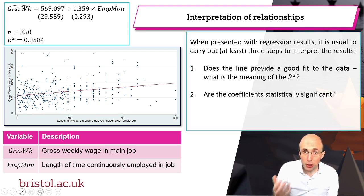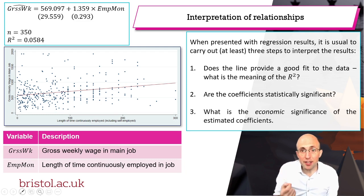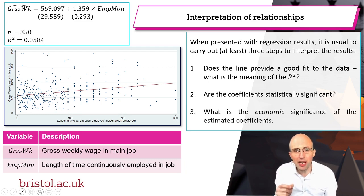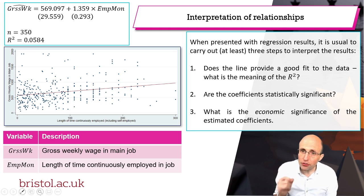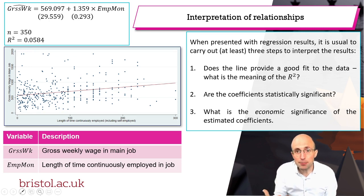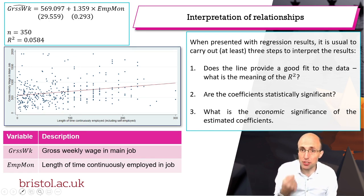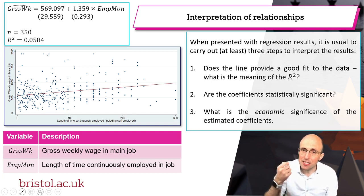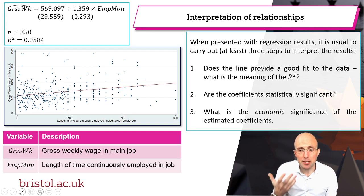The third step is to ask: are the estimated coefficients economically significant? This is the step that lots of people often miss out, but it's actually probably the most important step, because this is about explaining what the estimated coefficient actually means and asking whether the estimated effect is a big effect.